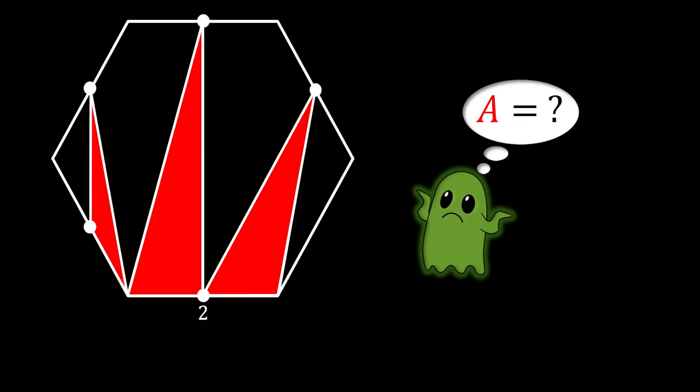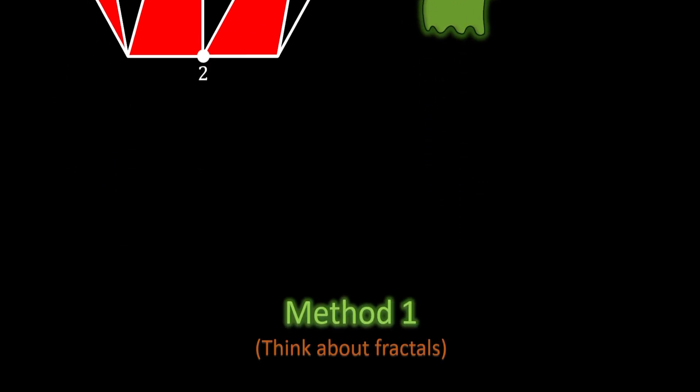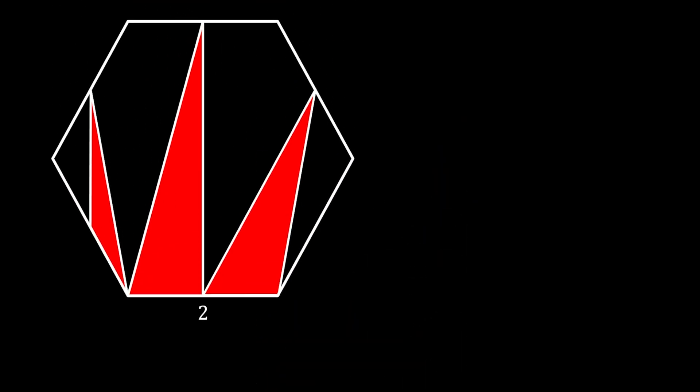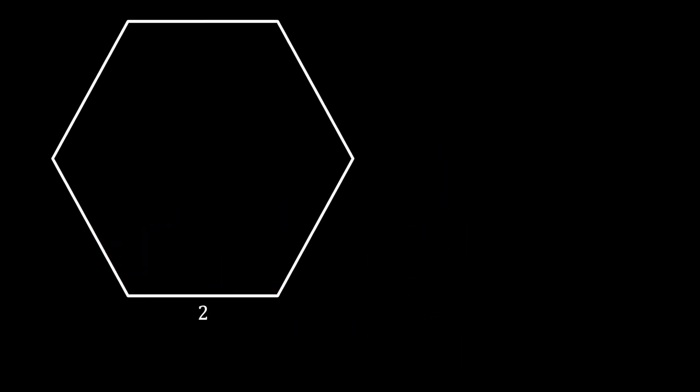You can pause this video right now, tackle this problem, and then come back and check the solution. Alright, so let's solve this one. I'm going to show you two different methods to solve this problem. In the first method, we're going to think of a way to simplify our hexagon. So first, we're going to lose those shapes for a moment and then think about how to simplify this hexagon.